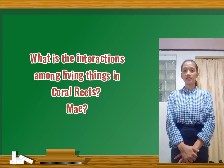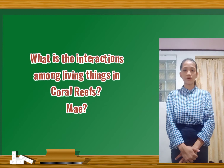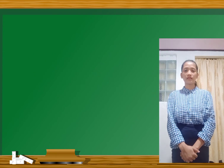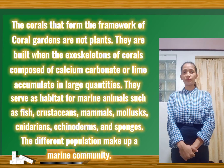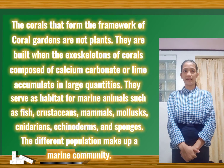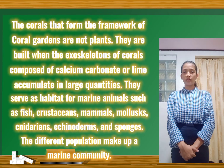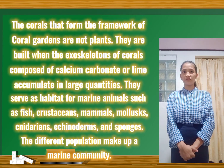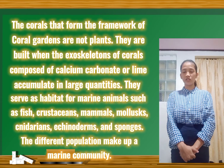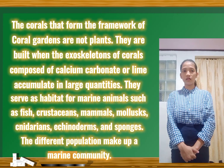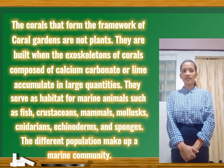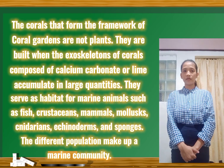Did you already know the answer from the game we had? What are the interactions among living things in coral reefs? The corals that form the framework of coral gardens are not plants. They are built with the exoskeletons of corals composed of calcium carbonate, or lime, which accumulate in large quantities. They serve as habitat for marine animals such as fish, crustaceans, mammals, mollusks, cnidarians, echinoderms, and sponges. The different populations make up a marine community.